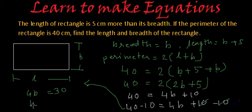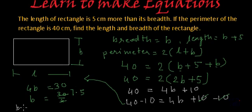So B will be equal to 30 divided by 4. So we have got breadth as 7.5 centimeters. B is equal to 7.5 centimeters. And length will be equal to B plus 5. So B plus 5, so 7.5 plus 5 will be 12.5 centimeters.